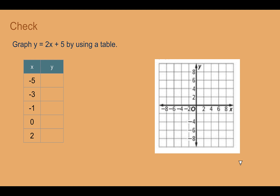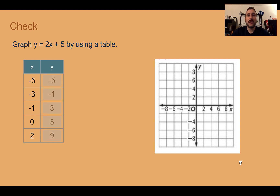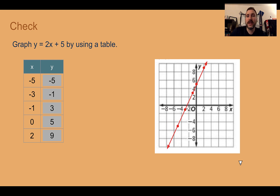Check your understanding: Graph y equals 2x plus 5 by using a table. Plug in the values they gave you for x, determine what the y's come out to be, and plot those points. Don't forget to connect with a straight line and put arrows at the end. Pause the video now and complete the check. If you plugged in those values for x, here are the values you should have gotten for y. Plotting the points — negative 5, negative 5; negative 3, negative 1; negative 1, 3; 0, 5; and 2, 9 — we can connect them all with a straight line.